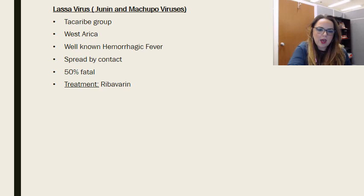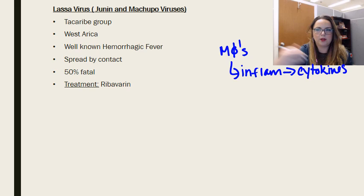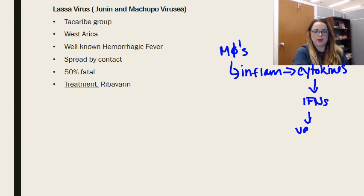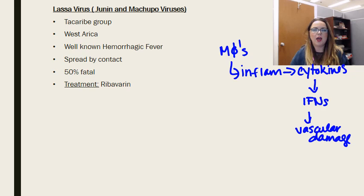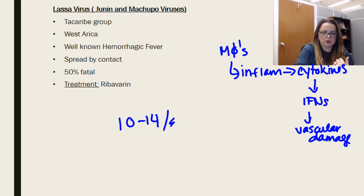Arenaviruses have an interesting pathogenesis. They're actually able to infect macrophages — that's where they want to be. In doing so, they induce an inflammatory response, which leads to immunopathogenesis. They induce the macrophage to produce cytokines, which can lead to cytokine storm — an intense cytokine release, particularly interferons. These interferons promote vascular damage, not as a result of the virus infecting endothelial cells, but as a result of infecting macrophages. There is also a T-cell mediated immunopathogenic effect, which significantly increases tissue destruction. Disease generally occurs on average about 10 to 14 days following exposure.